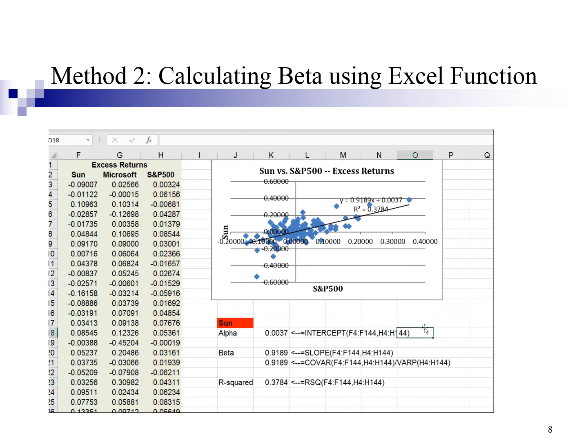To sum up, we have learnt two ways to calculate beta. The first method is to derive beta from the scatter diagram. The second method is to use Excel function. Both methods will give you the same answer.